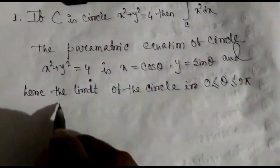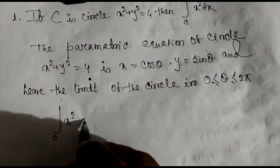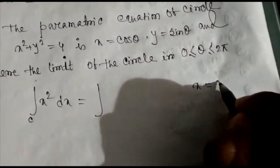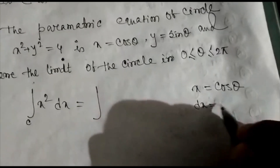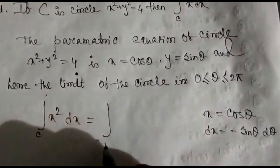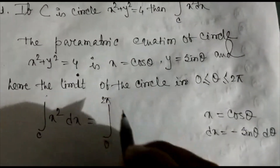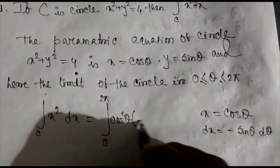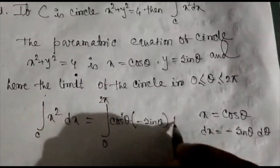We substitute all of this into the equation for x² dx. The parametric equation of the circle is x = cos θ, so differentiating both sides gives dx = −sin θ dθ. Putting these values in, the limit is 0 to 2π, x² = cos²θ, and dx = −sin θ dθ.